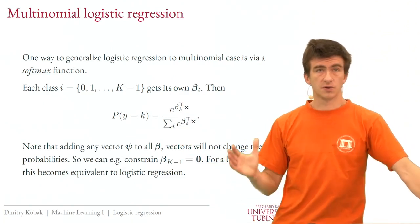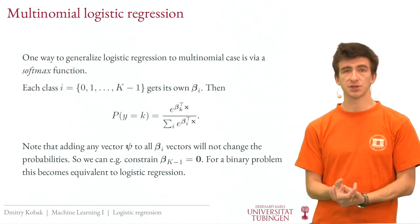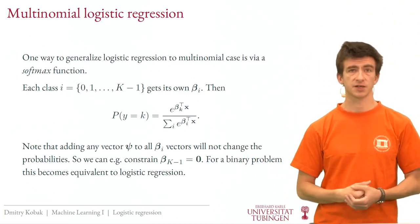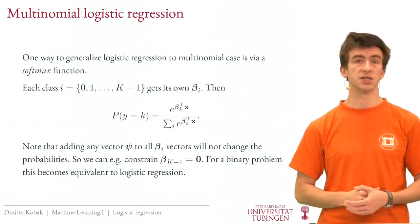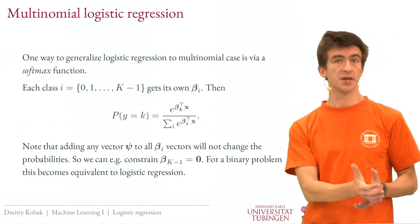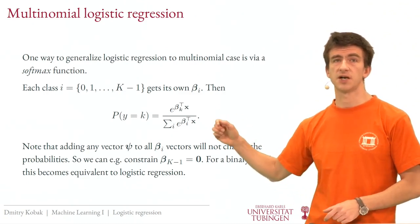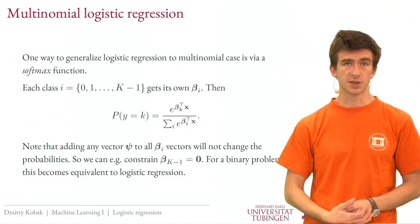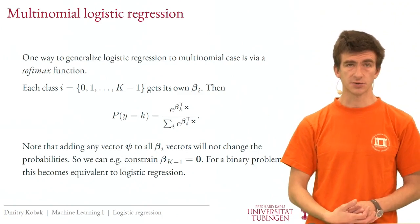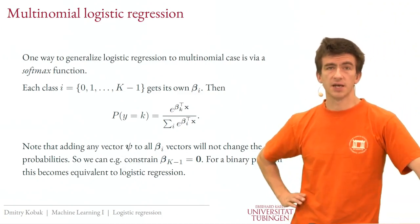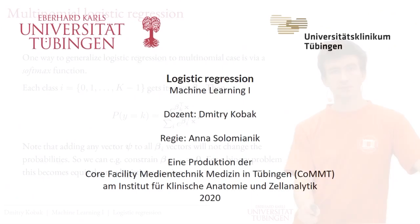To summarize: logistic regression is a special case of multinomial logistic regression defined by the softmax function. Later, when we use neural networks to classify images among 10 different objects, we'll use the softmax function at the end to get probabilistic predictions. For two classes, this reduces to the logistic regression problem with the logistic function at the end. That's all for today. Thank you.